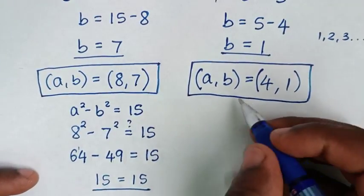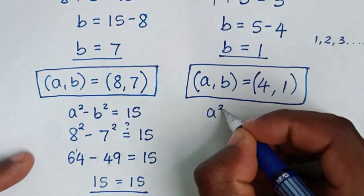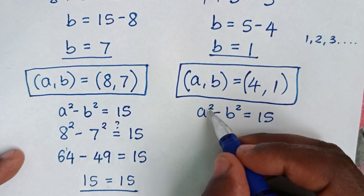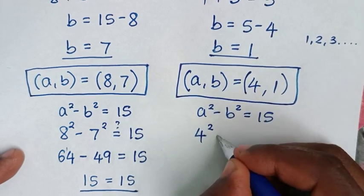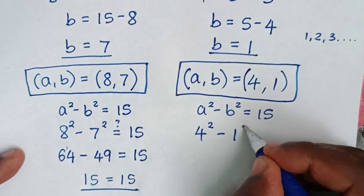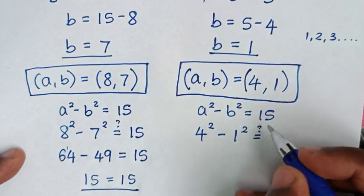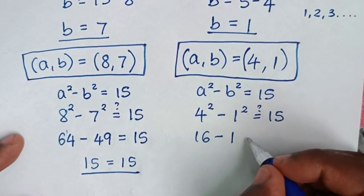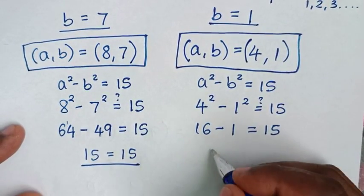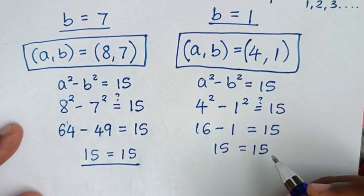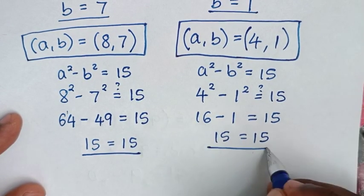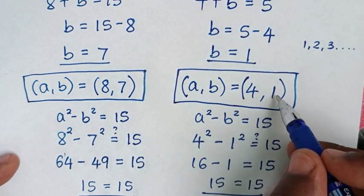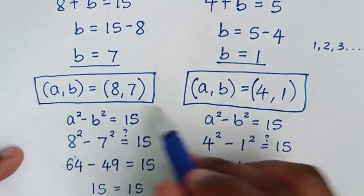Now verifying the second solution: substituting a equals 4 and b equals 1 into a squared minus b squared equals 15 gives 4 squared minus 1 squared, which is 16 minus 1 equals 15. The left side equals the right side, confirming that (4, 1) is also a correct solution. Both solutions are verified.